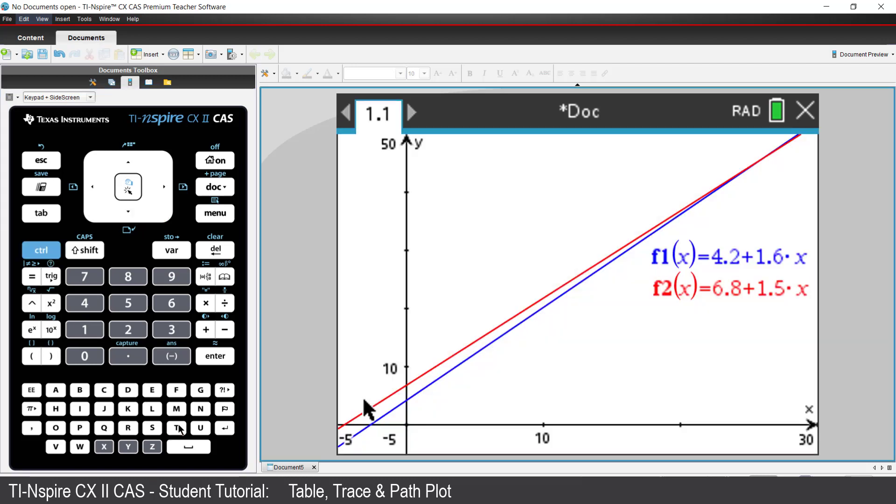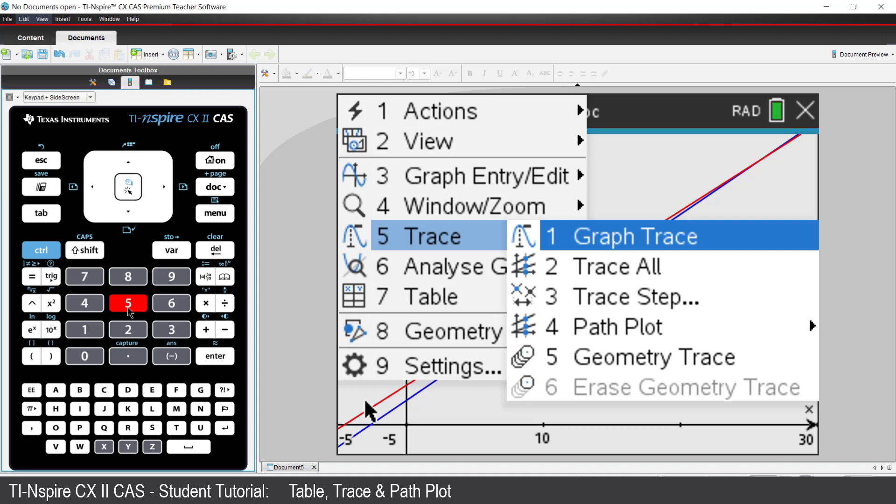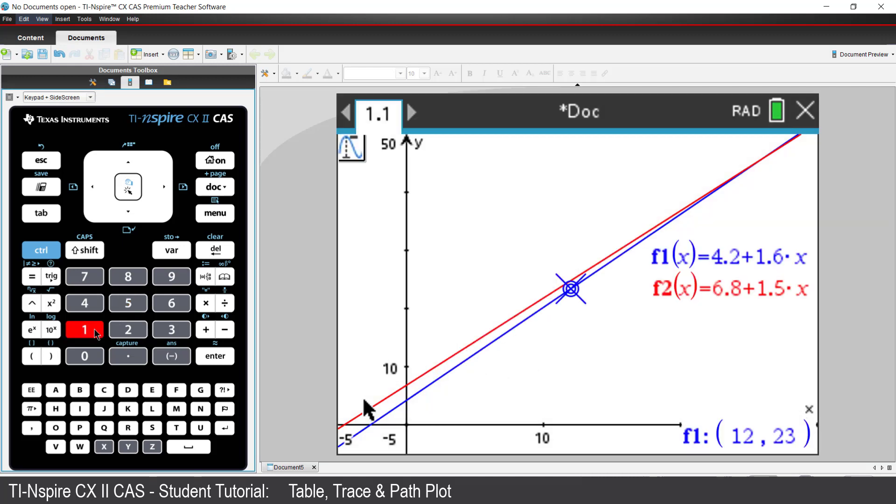Another way to explore the fares is to use the Trace option. Press Menu, select Trace, followed by Graph Trace. Use the left and right arrow keys to move along the graph, and use the up and down arrow keys to navigate between functions.